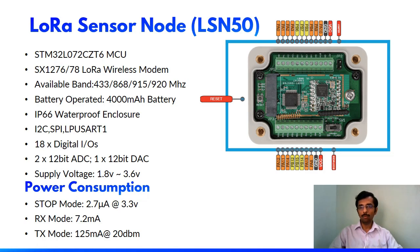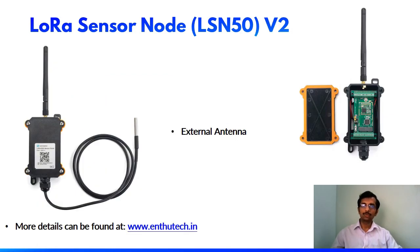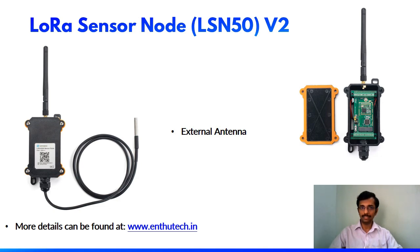It is a very low power consumption device, making it suitable for longer distance communication. This is the LSN50 version 2. The major difference between version 1 and 2 is that version 2 uses an external antenna, whereas version 1 has an internal antenna, giving version 2 better signal strength and quality. All remaining specifications are the same. For more details, visit our website at www.enthutech.in.